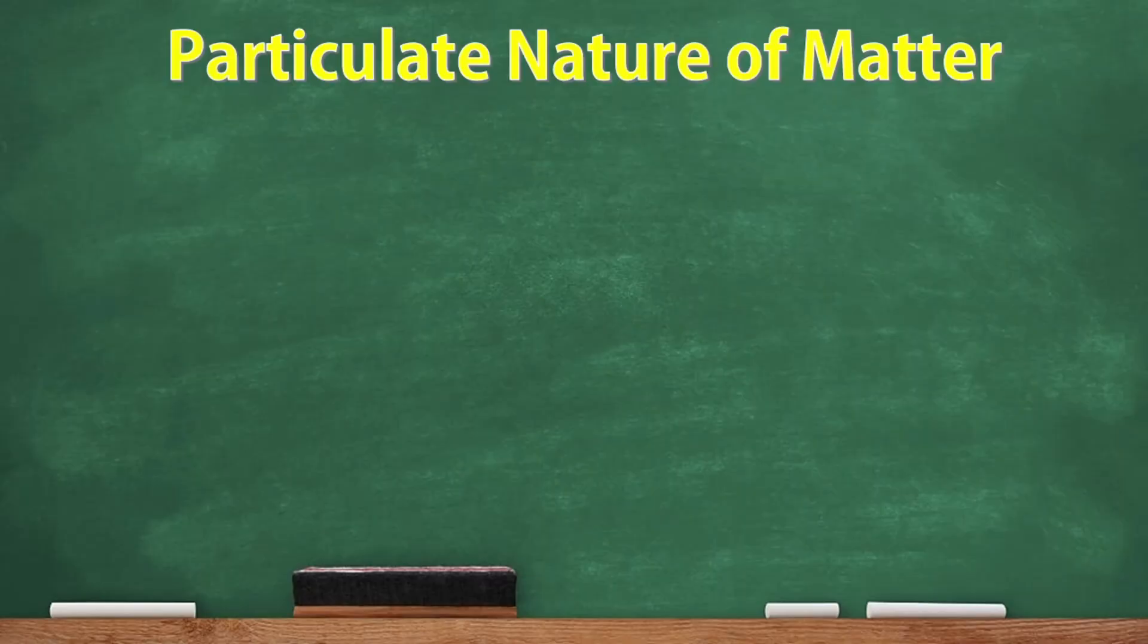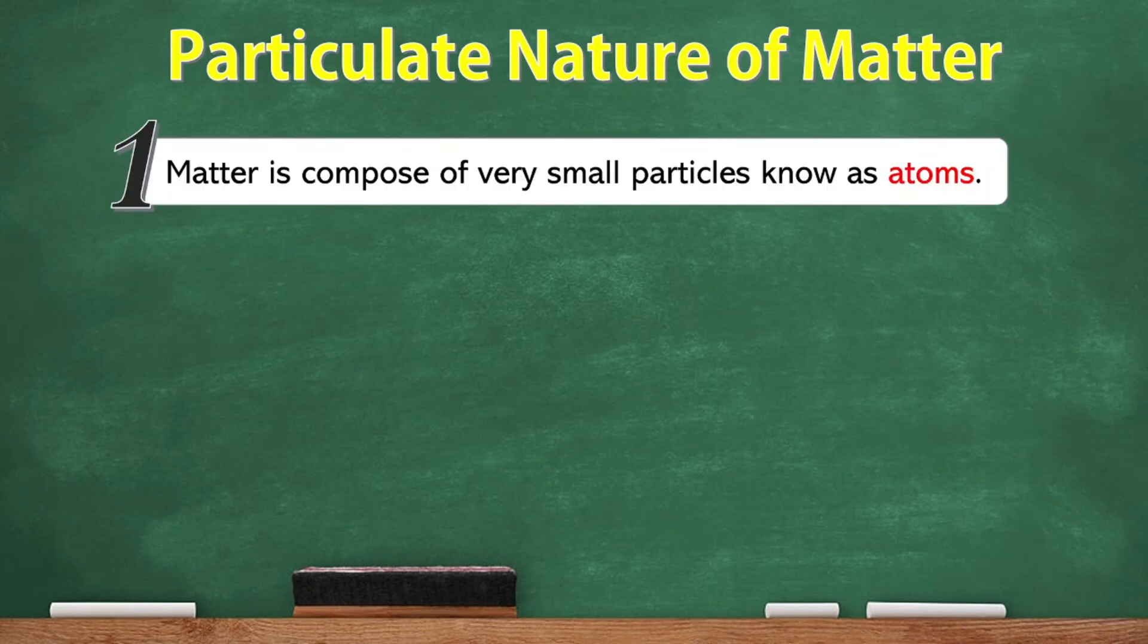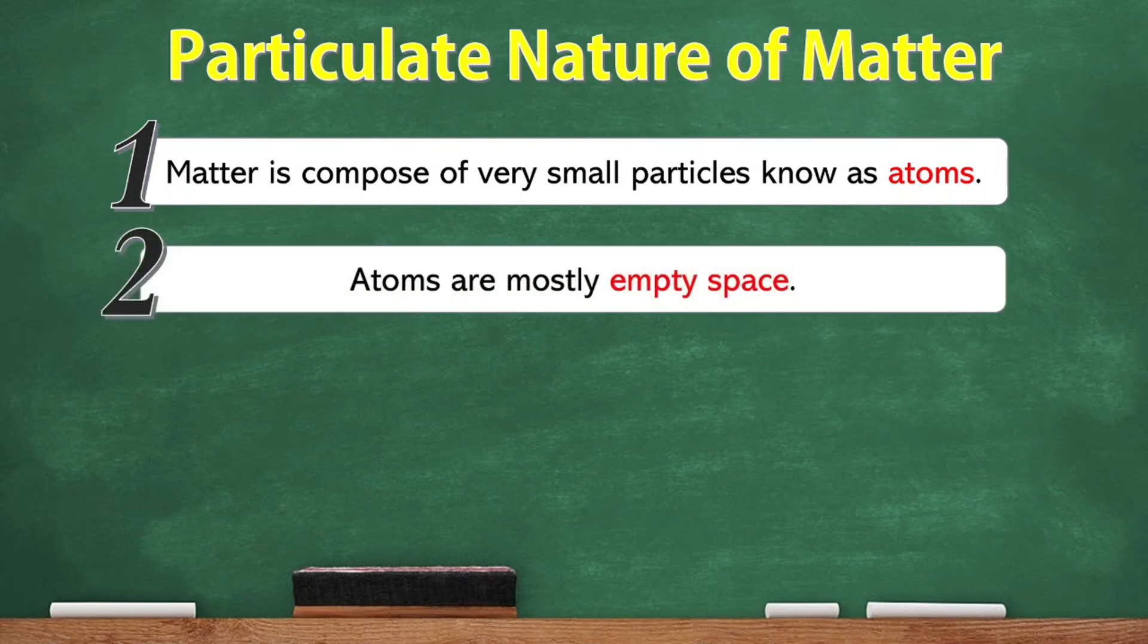To recap, let's take a look at the four ideas that tell us about the particulate nature of matter. Number one, matter is composed of very small particles known as atoms. Even though atoms are composed of smaller particles, most of the atom is empty space.